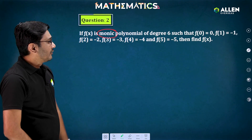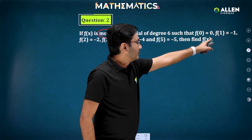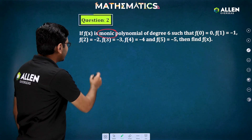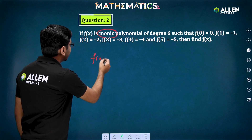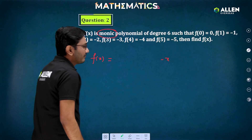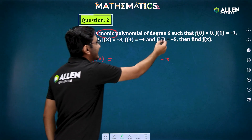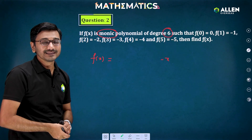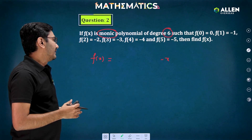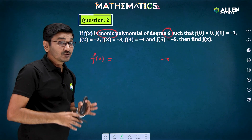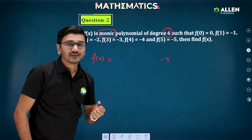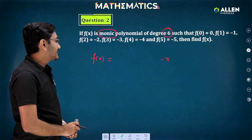If you look at the question, for input 0 you get output 0, for input 1 you get minus 1, for input 2 you get minus 2. So it seems like f(x) = minus x. But since f(x) is a degree 6 polynomial, you cannot just assume f(x) = minus x, even though it satisfies these values.